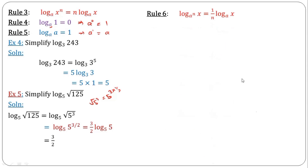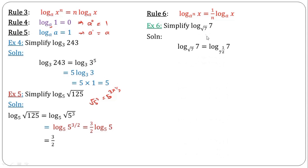The sixth rule says: what if the power is not on the number of the logarithm but on the base of the logarithm? It will also come to the back to multiply, but it comes as a reciprocal. For the next example, we express root 7 in index form where the base is 7. Square root is the same as power of one-half, so this power of one-half comes to the back. When it does, it becomes 1 over one-half, which is 2. So log 7 base 7 equals 1, and 1 times 2 equals 2.